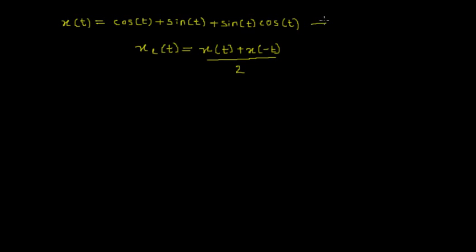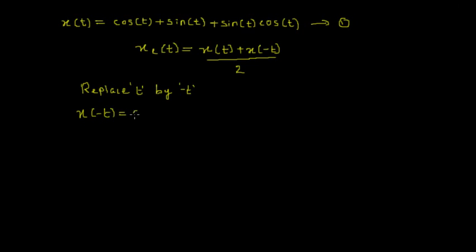I call the given equation as equation 1. The task is to find x(-t). We know what x(t) is, but we need to find x(-t). To find x(-t), we replace t with minus t in equation 1. So we get x(-t) is equal to cosine(-t) plus sine(-t) plus sine(-t) times cosine(-t).